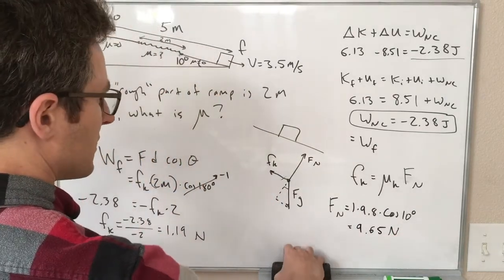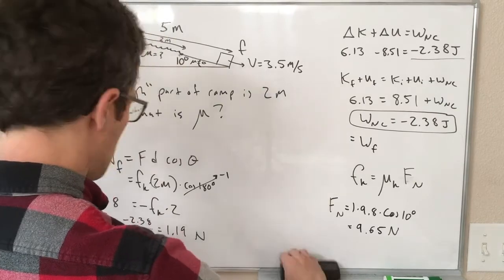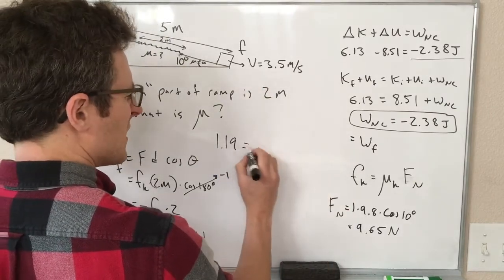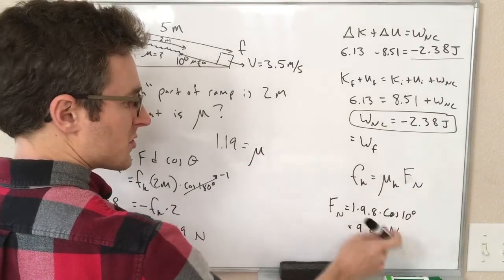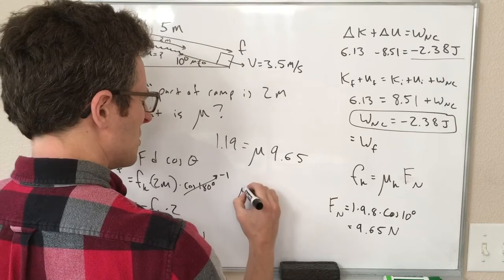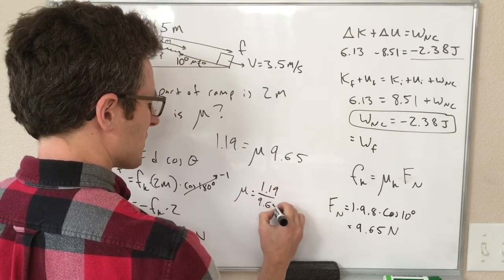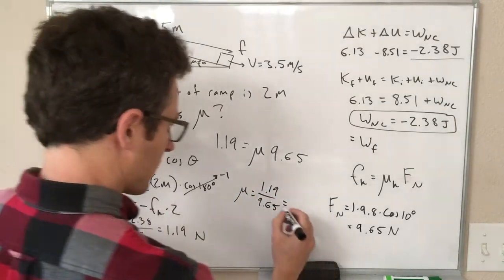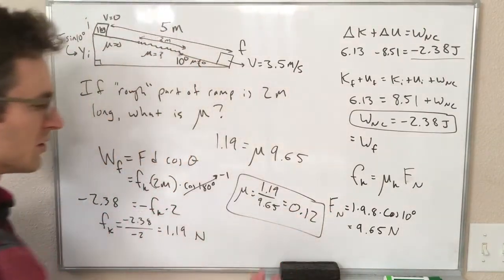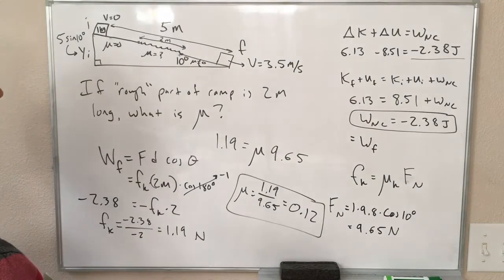So, putting this all together, we are almost done with this. We know the force of friction, 1.19 newtons. That is equal to mu times our normal force, which is 9.65 newtons. So, mu is equal to 1.19 over 9.65. And that is 0.12. And mu is unitless, so it's just 0.12.